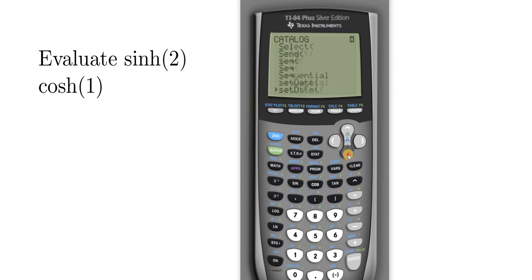Then you can start scanning manually by hitting the down arrow key. There it is, sinh. Then you hit enter, 2, parenthesis, enter. And that is the value of sinh 2.